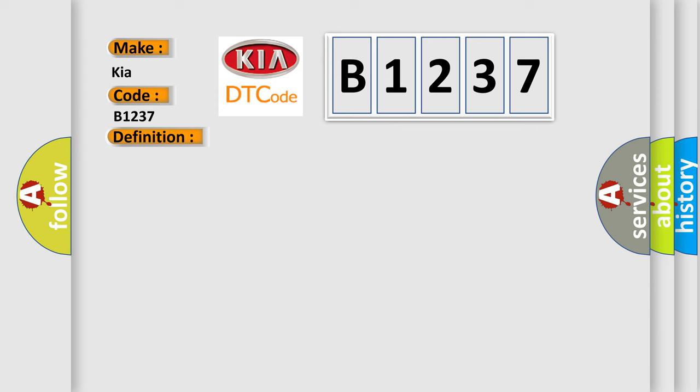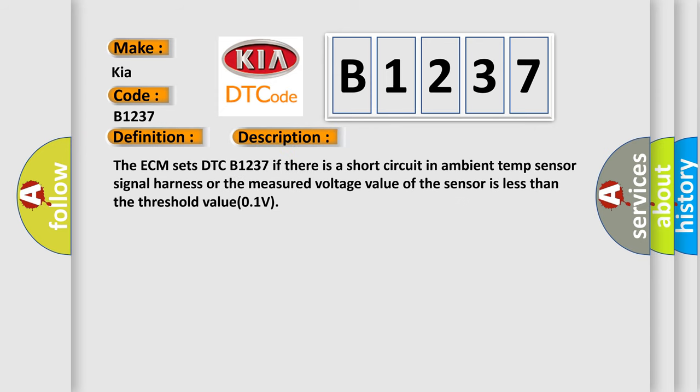And now this is a short description of this DTC code. The ECM sets DTC B1237 if there is a short circuit in ambient temp sensor signal harness or the measured voltage value of the sensor is less than the threshold value 0.1V.